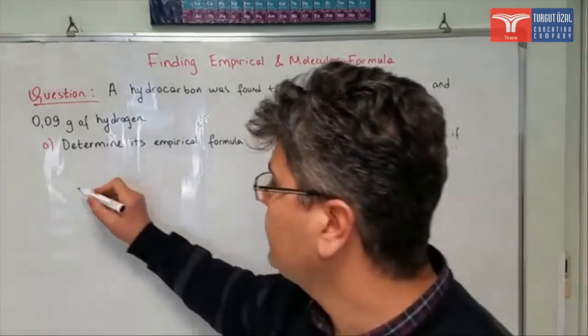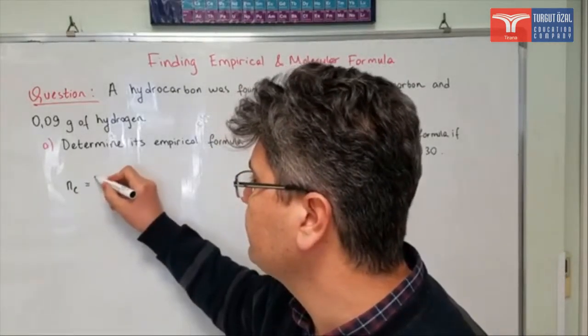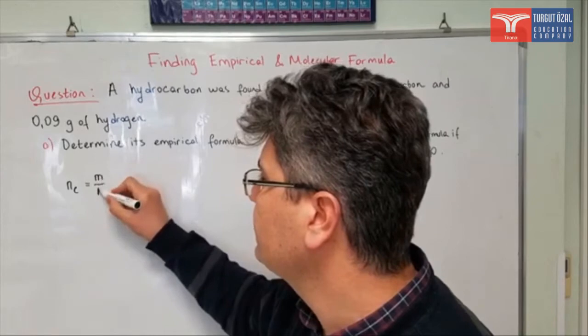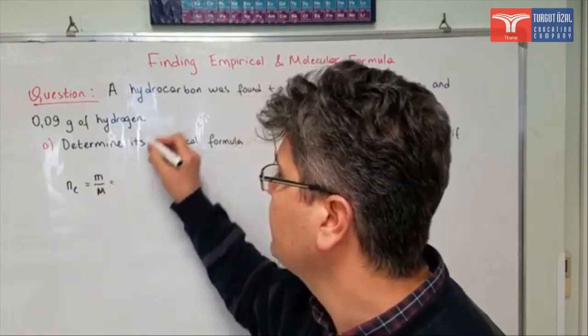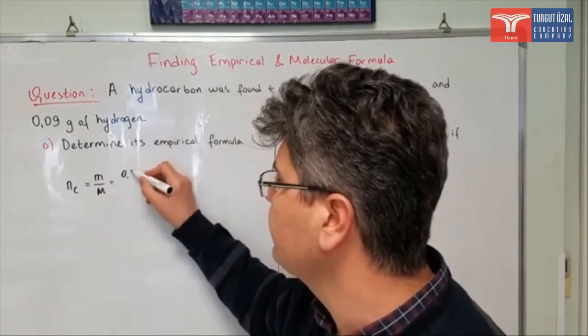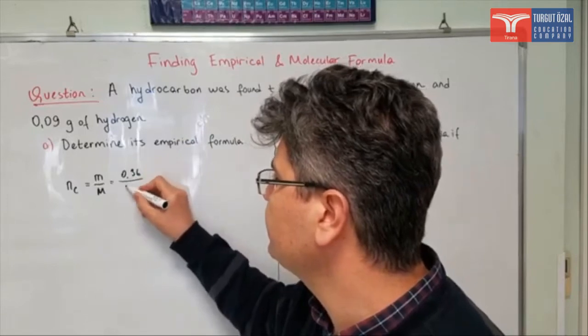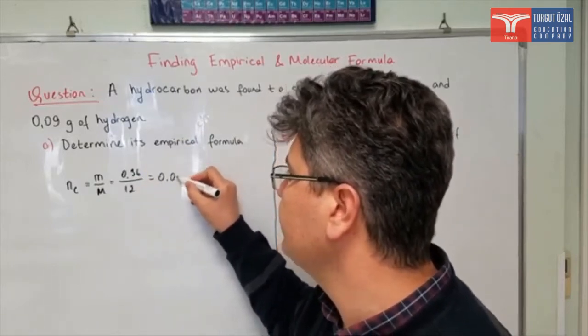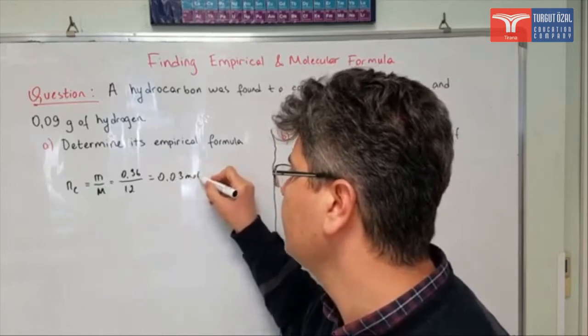If you remember the formula, mole number of carbon equals mass over molar mass. So, mass is given to be 0.36, molar mass is 12, and you divide, it's 0.03 mole.